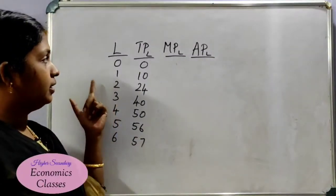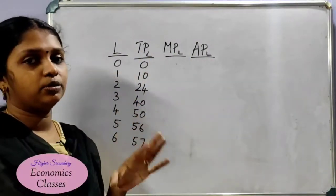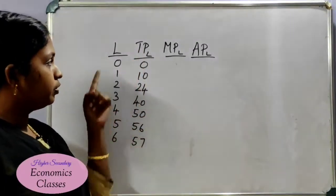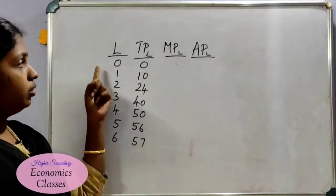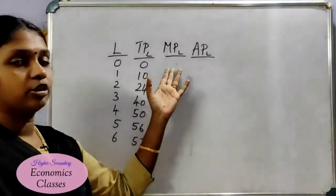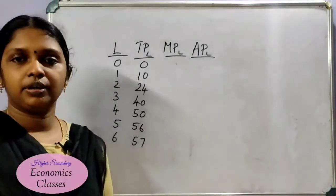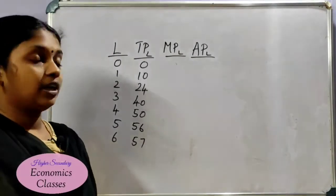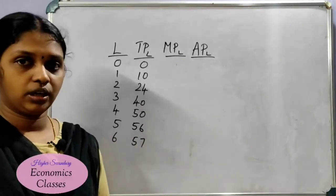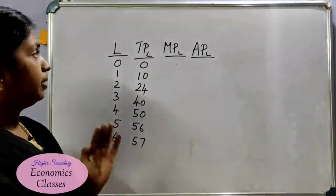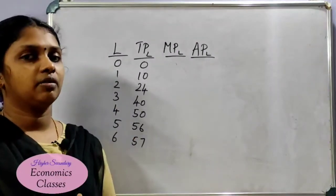For example, we have a table with Labor (L), Total Product (TPL), Marginal Product (MPL), and Average Product (APL). In past exam papers, they will give you a question worth 2 or 3 marks. They will give you the total product and ask you to find the marginal product and average product. You can also take this as an essay question.